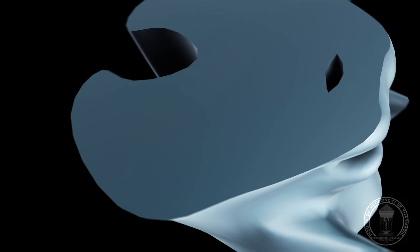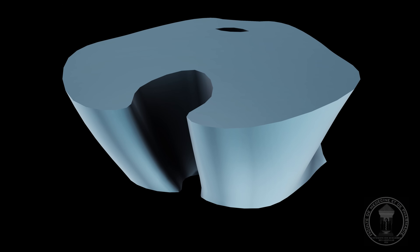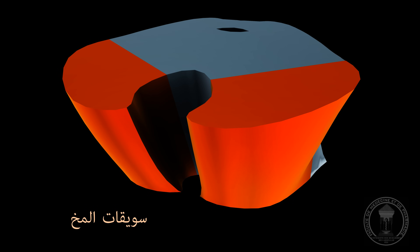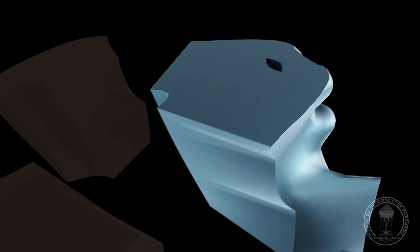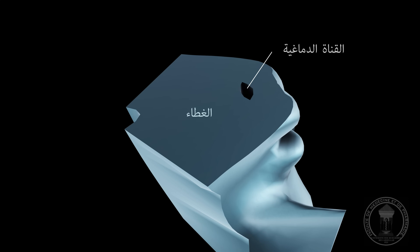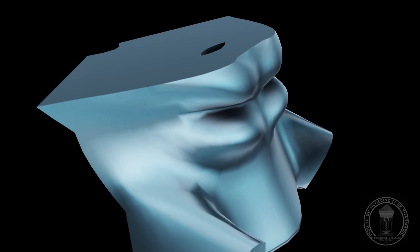الدماغ المتوسط هو الجزء العصبي المرتبط مباشرة بالدماغ الأمامي من خلال سوايقات المخ. خلف هذه السوايقات يوجد الغطاء، وخلفه مباشرة توجد القناة الدماغية المعروفة أيضاً باسم مسال سيلفيوس، التي تربط البطين الثالث بالبطين الرابع. على الجزء الخلفي من الدماغ المتوسط يوجد السقف، ويتكون من أربعة بروزات تعرف بالأكيمات: أكيمتان علويتان لحاسة البصر، وأكيمتان سفليتان لحاسة السمع.